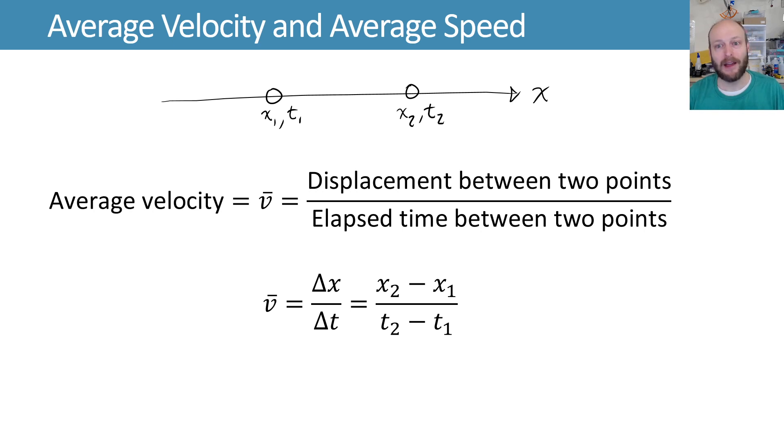So that's velocity. And just like displacement is a vector quantity, velocity is a vector quantity. That means that when we're traveling in the positive x direction, we have a positive velocity when we're traveling to the right here. And when we're traveling in the negative x direction, we have a negative velocity.